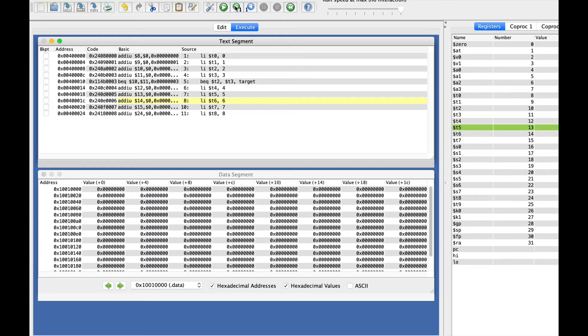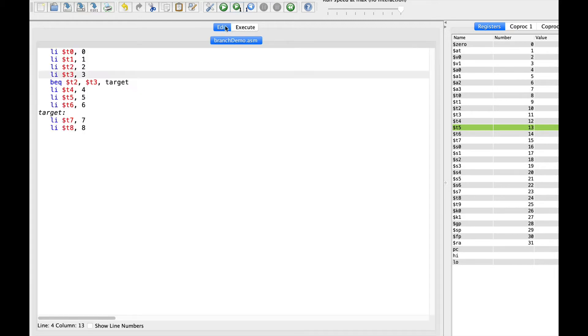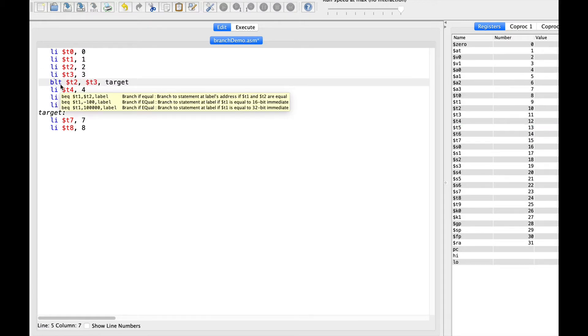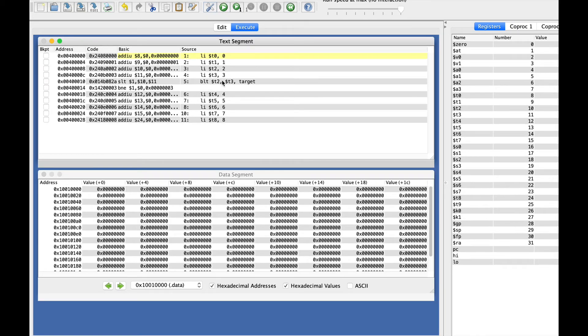In MIPS, BEQ and BNE are the only two actual hardware branch instructions. Other conditions are actually pseudo instructions. So for example, if I change this BEQ to BLT for branch if less than, and we look at the code, we can see that BLT instruction is actually a pseudo instruction. It turns into a set less than with a branch conditioned on the result of that set less than. And that is true for other sorts of branches like branch of greater than, branch of less than or equal, and so on.